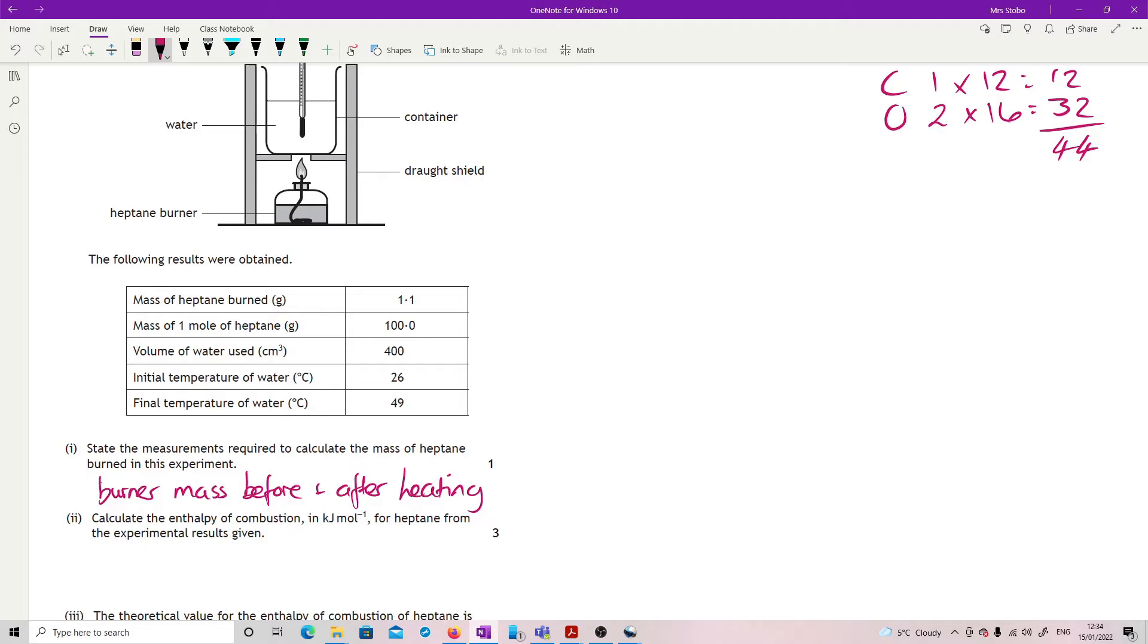Calculate the enthalpy of combustion in kilojoules per mole for heptane from the experimental results given. It's three marks, but to be honest, if you're following the setup and running a proportion, it doesn't look like it always. But you're right. Basically, have a little bit of faith. So delta H is CM delta T. My C is 1.48 from the back of the data book. My mass, mass of water, being very careful here. 0.4. And the temperature is my temperature change here. 26 going up to, oh, 26 to 49.